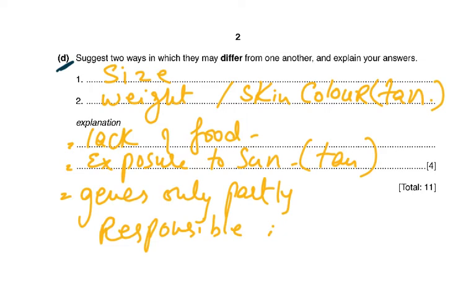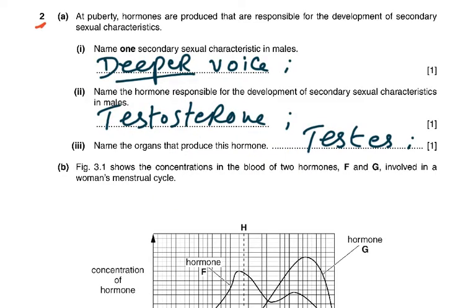Question two: at puberty, hormones are produced responsible for the development of secondary sexual characteristics. Name one secondary sexual characteristic in males: a deeper voice, hair on the face, stronger muscles, or sperm production.